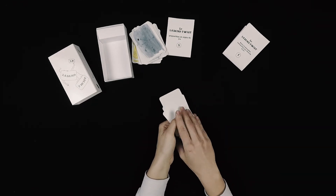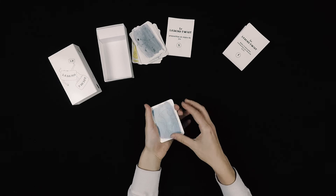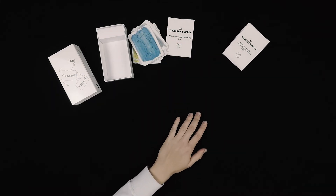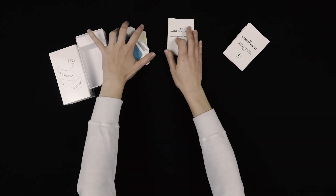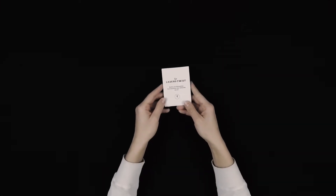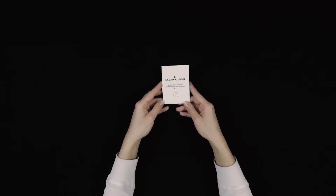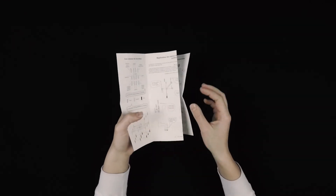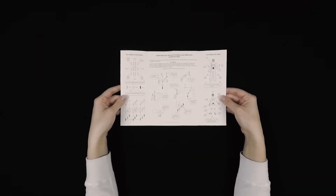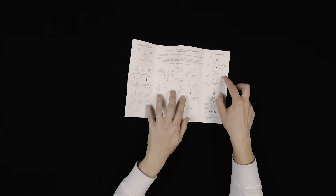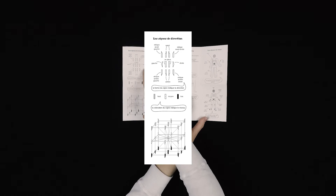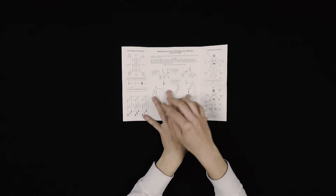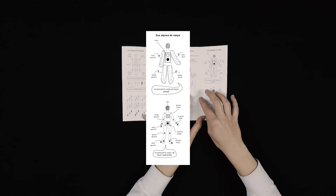Les jokers nous permettront soit de remplacer une carte manquante, soit de laisser libre cours à l'imagination des joueurs. La notice d'information et d'introduction aux éléments du jeu nous permet de mieux comprendre la signification des signes. Sur la partie gauche, nous avons les explications des signes de direction. Sur la partie droite, les explications des signes de corps.